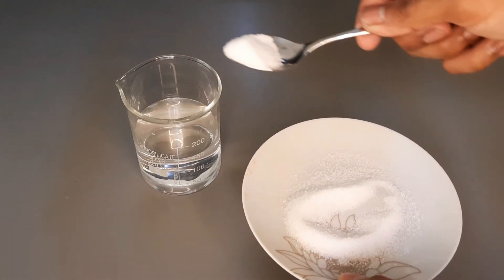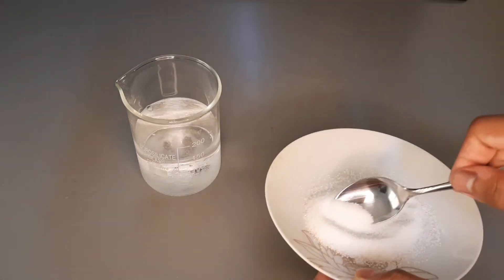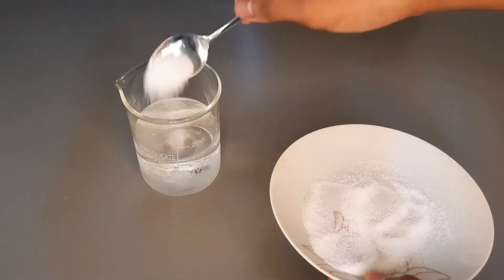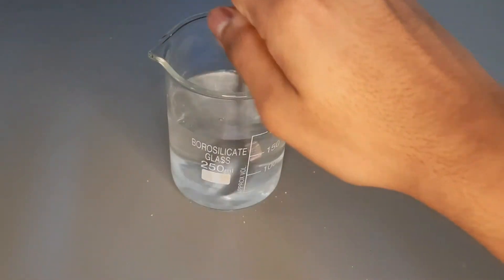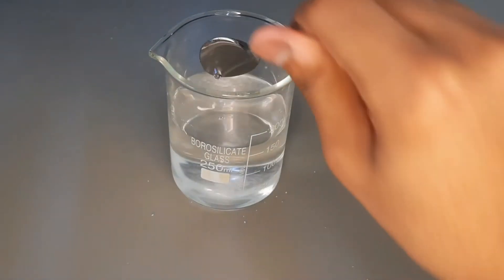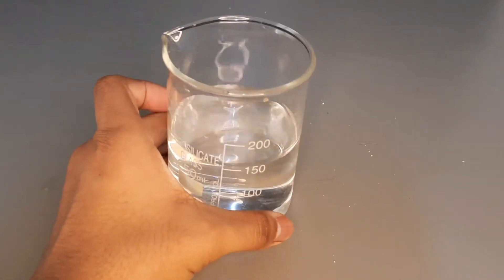Put some sugar grain into water. Dissolve it. You can see that there is no rise in the level of water.